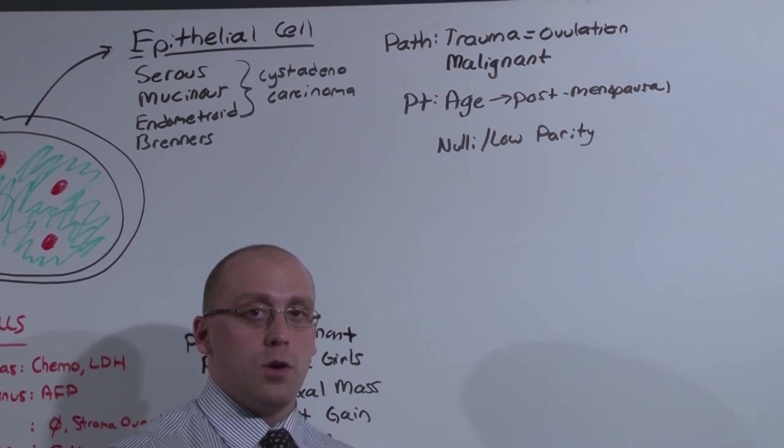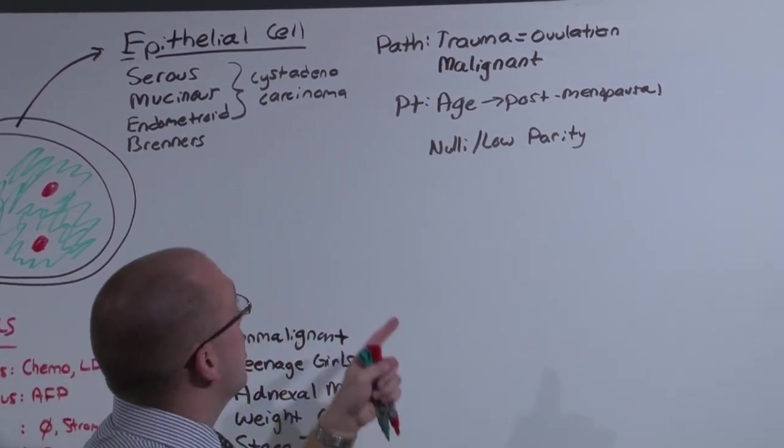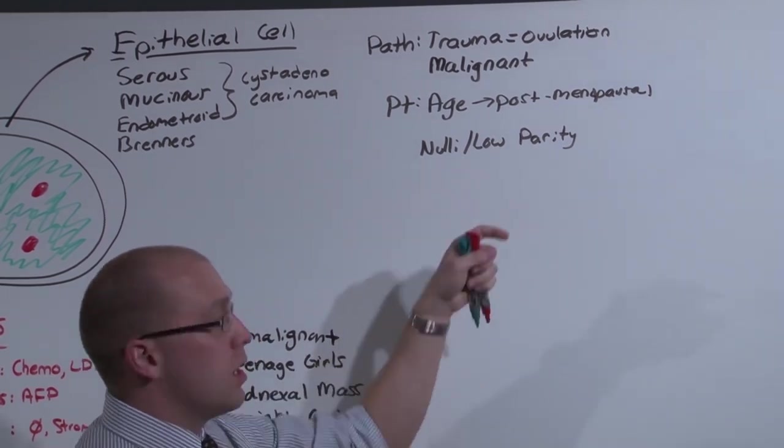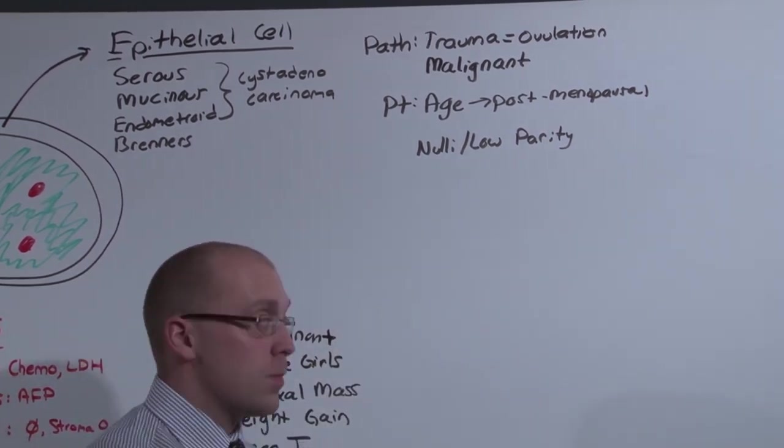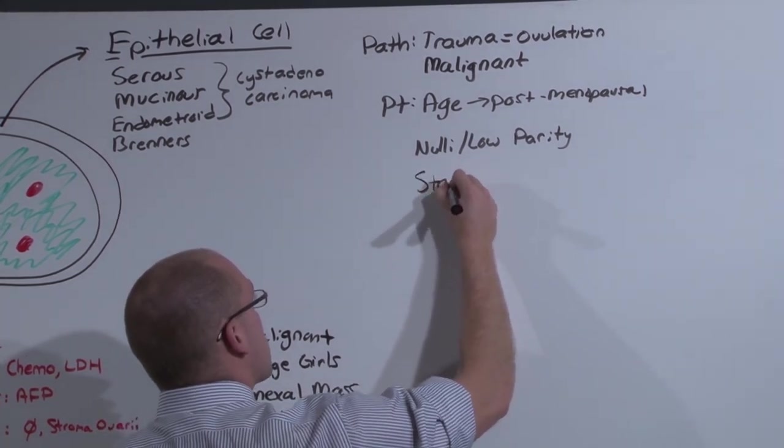Conversely, the use of OCPs, which prevent ovulation, are going to decrease the risk of epithelial cell tumors, as will someone who has had multiple pregnancies. Unfortunately, these usually present as stage 3B.